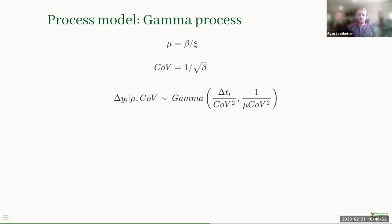The mean wear rate mu controls the general slope of the overall degradation process, whereas the coefficient of variation describes how different each of the jumps can be. This makes eliciting information and interpreting results a lot easier. Because there's no covariance between these two parameters, sampling is also a lot easier. Delta y is the difference — the jumps in degradation — and the delta t's are the time steps.